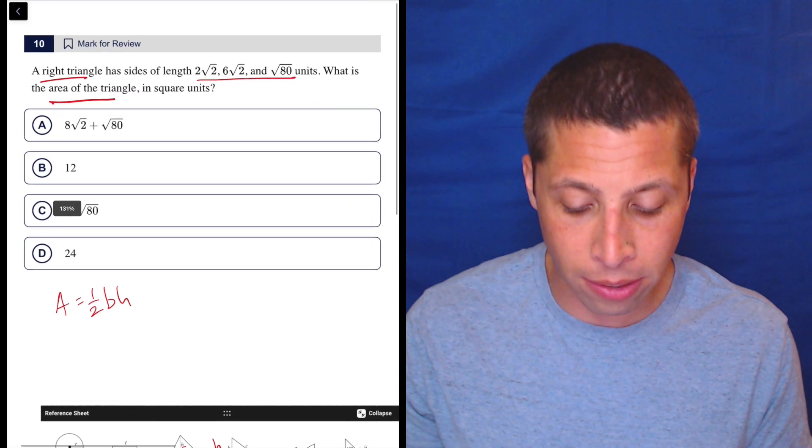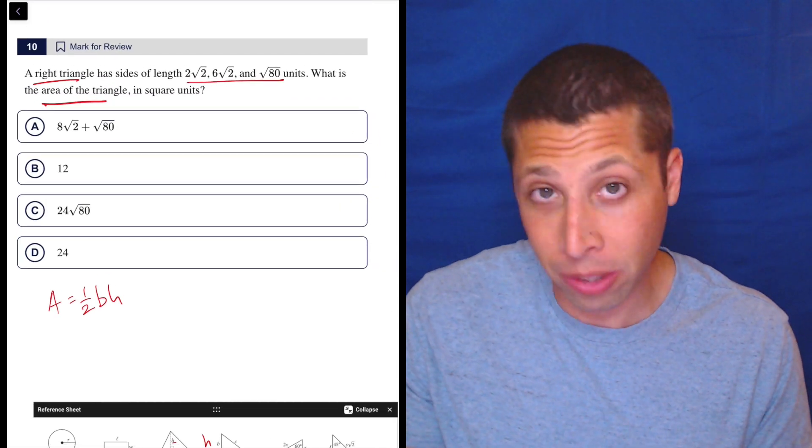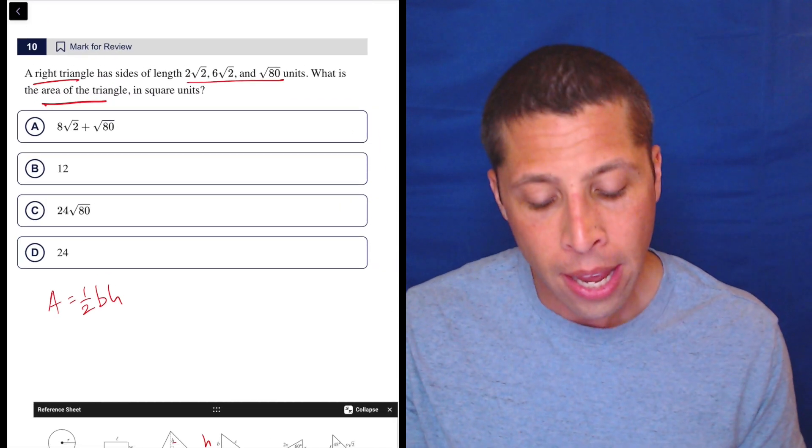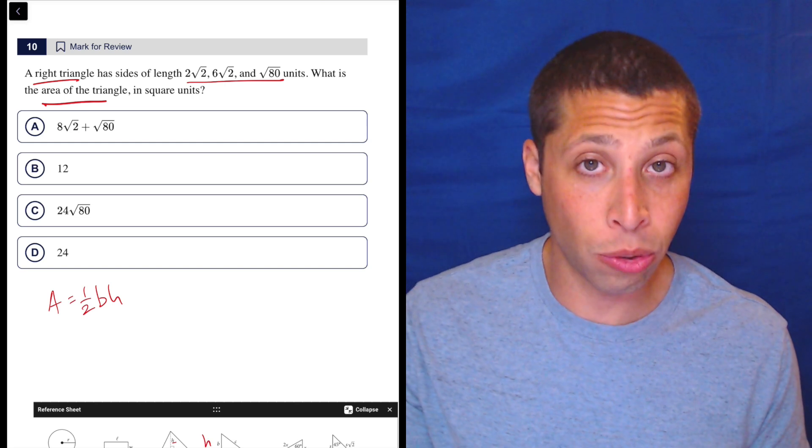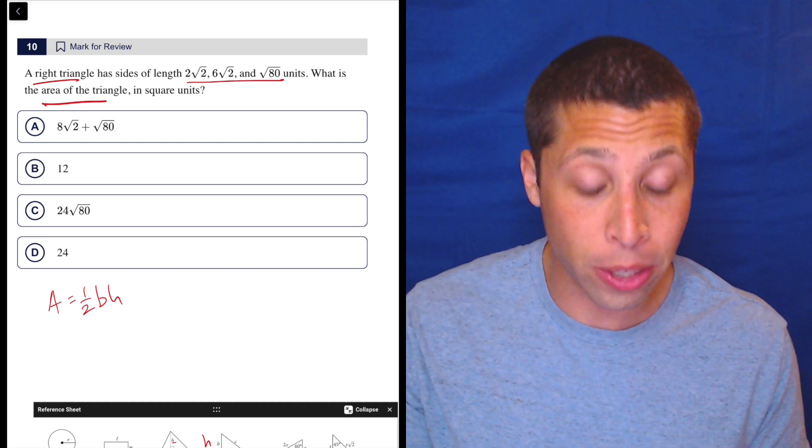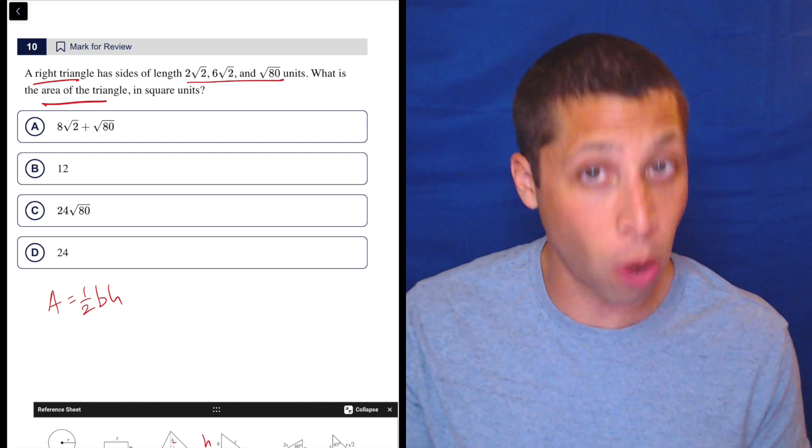But we need to know which ones are, what's the base, what's the height, and I guess what's the hypotenuse so we can exclude it. So the key is that the hypotenuse of the triangle, the one we want to exclude, is going to be the biggest side. That's always the case.